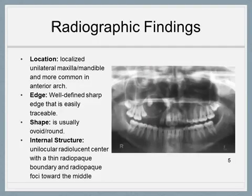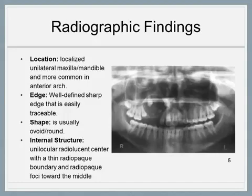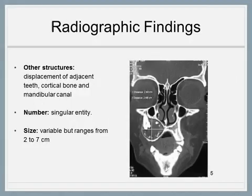Radiographic findings use the lesion acronym. Location: located unilateral in the maxilla or mandible, more commonly in the anterior arch. Edge: well-defined, sharp edge that is easily traceable. Shape: usually ovoid to round. Internal Structure: unilocular radiolucent center with a thin radiopaque boundary and radiopaque foci toward the middle.